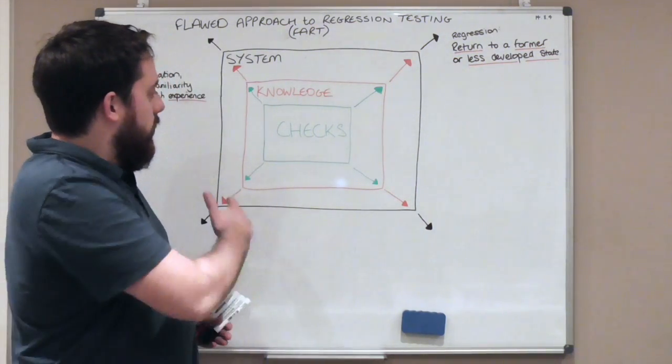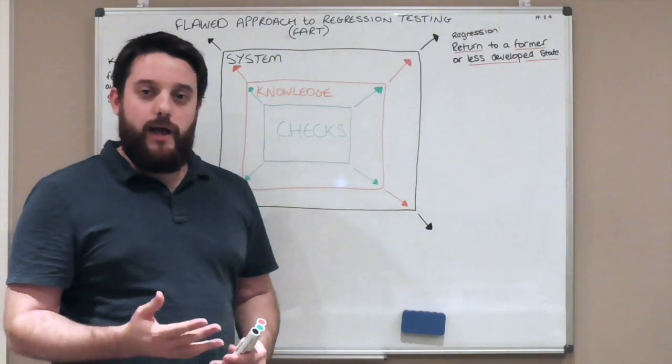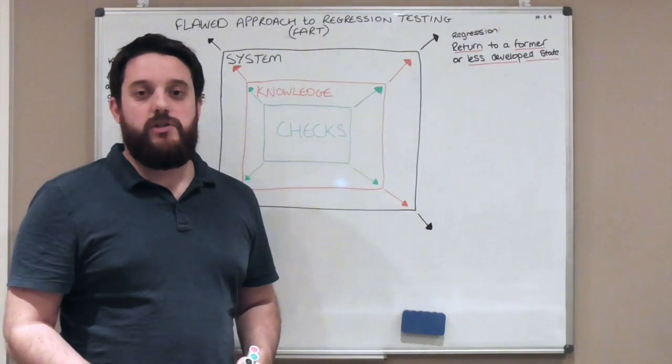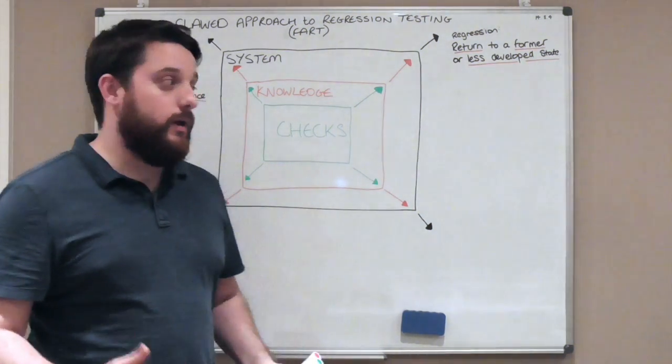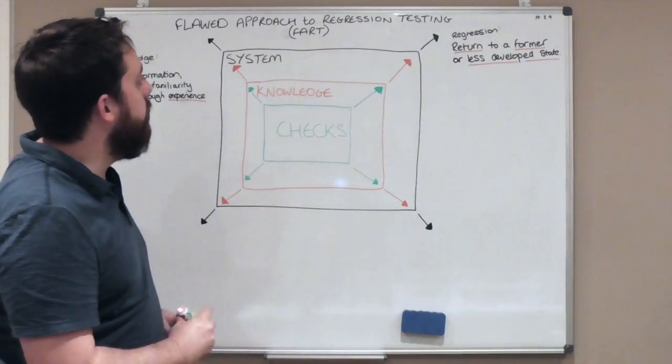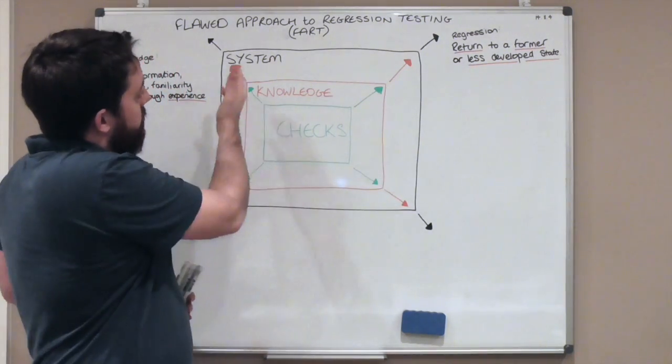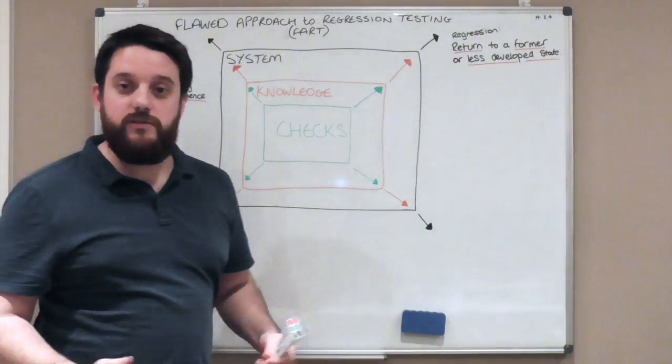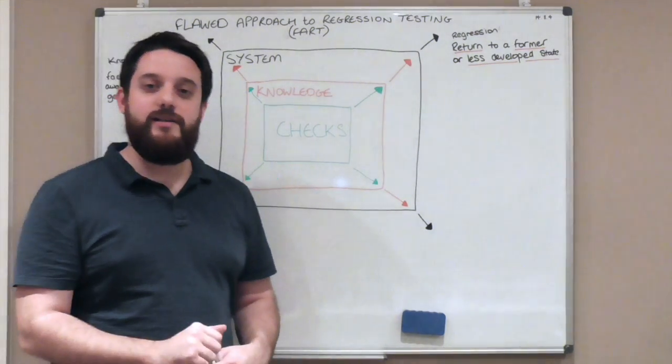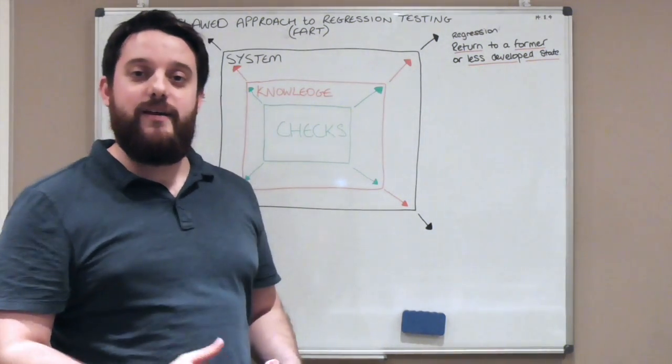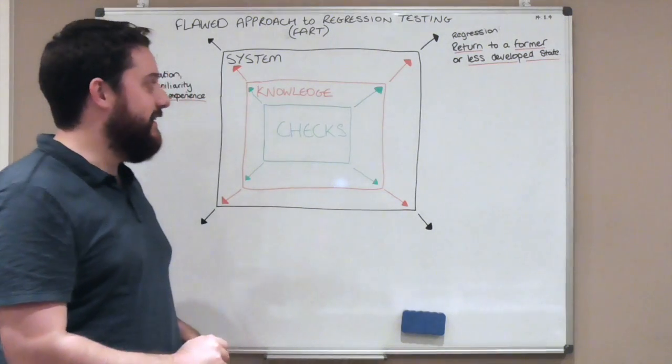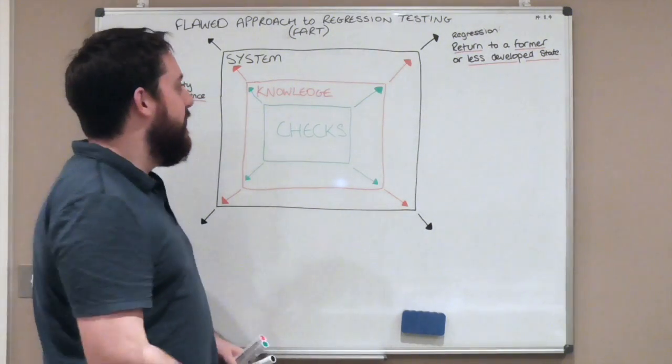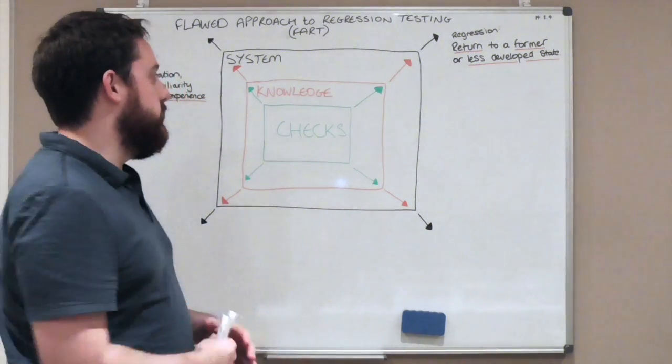I want to try and explain why I believe some people's approaches to regression testing is flawed. To do that, I created a model and named it The Flawed Approach to Regression Testing. About an hour later, I realized that in acronym form that is FART, which is actually quite entertaining and also quite relevant.